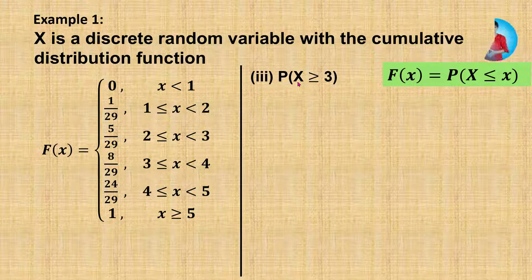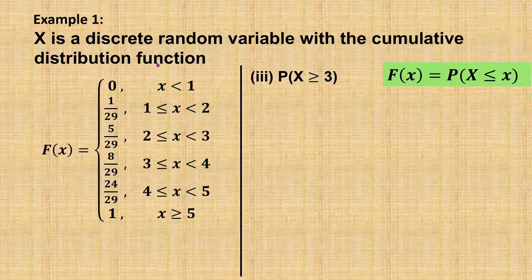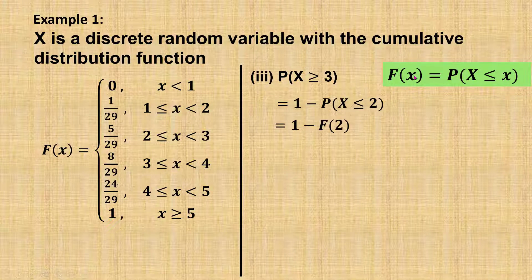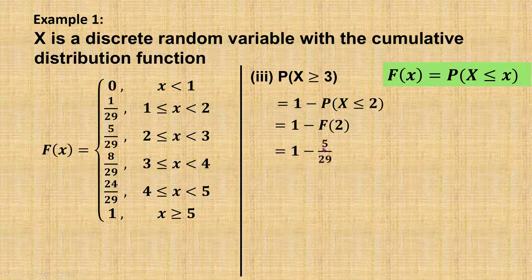Next, find the probability when x is greater than or equal to 3. Since we are using the cumulative distribution function to find the probability, we must change greater than or equal to into less than or equal to. So x ≥ 3 is the same as 1 minus P(X ≤ 2), which equals 1 minus F(2). From the cumulative distribution function, F(2) equals 5 over 29. So 1 minus 5 over 29 equals 24 over 29.